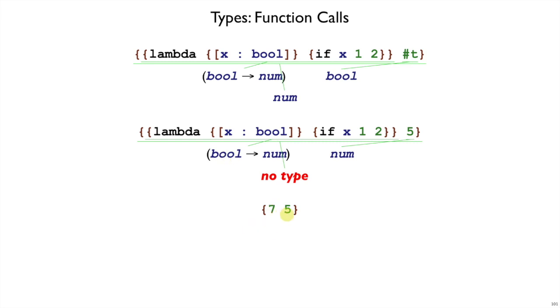Or if we have 7 applied to 5, the reason we reject this is because 7 has type num, 5 has type num, but there's no arrow over here to match up. So since there's no arrow, it's not going to be okay. And we will say that expression has no type.